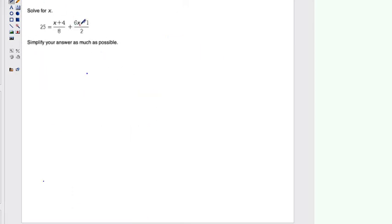So here's another example. And I can see that I have denominators 8 and 2. So my common denominator is going to be 8. So I'm going to multiply both sides of this equation by 8.